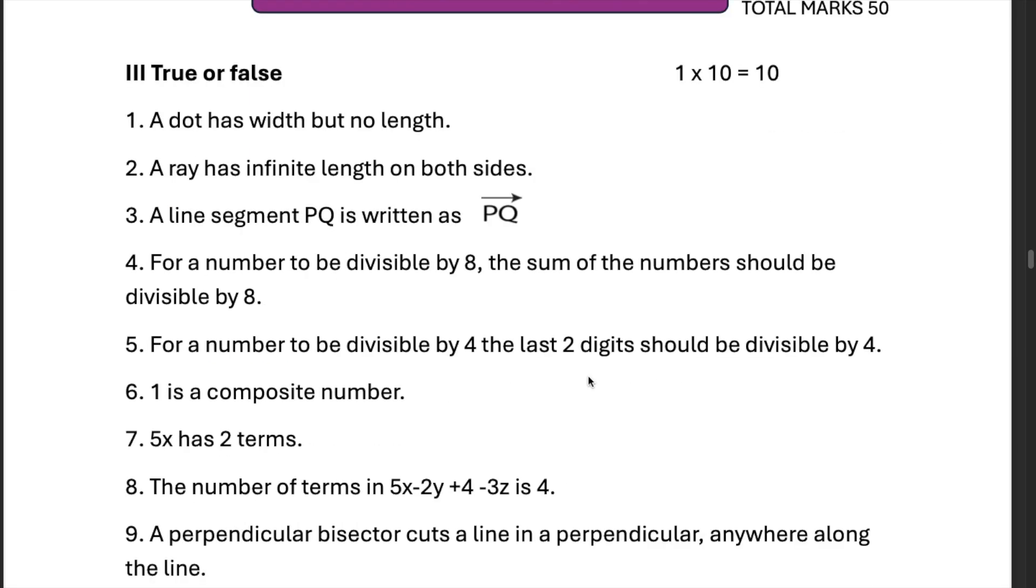True or false, a dot has width but no length. That's false because it doesn't have width nor length. A ray has an infinite length on both sides. That's wrong. It only has an infinite length on one side. It starts from a point and goes on indefinitely in one particular direction.